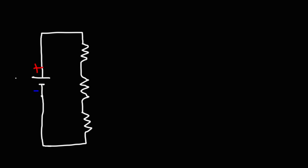Now let's talk about the formulas you need to know when dealing with a series circuit. Let's say we have a battery and three resistors connected in series. We have the voltage of the battery, resistor 1, resistor 2, and resistor 3.